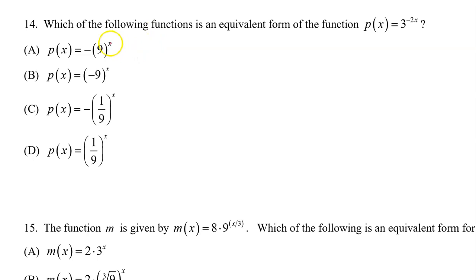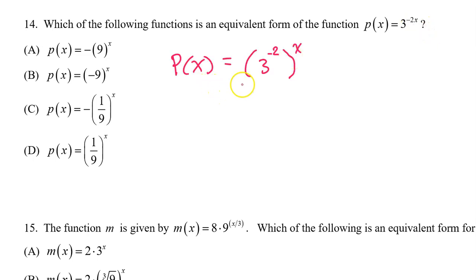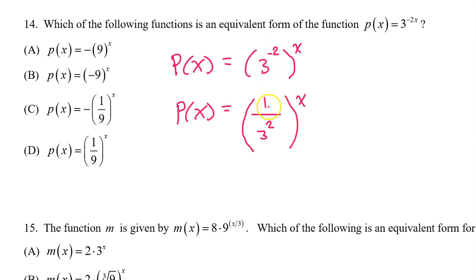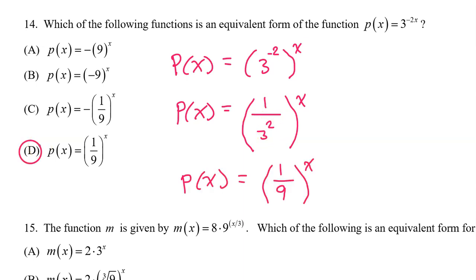On number 14, all answer choices have x outside the parentheses by itself, so I need to pull the x outside. We have 3 to the negative 2 power — a negative exponent drops to the denominator, giving 1 over 3 squared, which is 1 over 9. So we have 1 over 9 to the x power, and the answer is d.